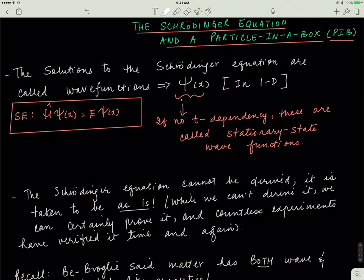We'll begin this video by discussing the Schrödinger wave equation and then subsequently discuss something about a particle in a box. The particle in a box is a really useful problem that helps us lay the foundation of where quantum mechanics is used. It also introduces quite a few interesting things about quantum mechanics, such as the probabilistic interpretation of the wave function. For now, let's understand what the Schrödinger wave equation is.